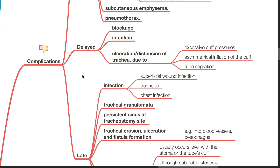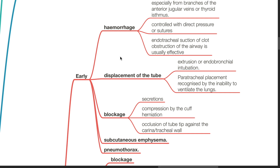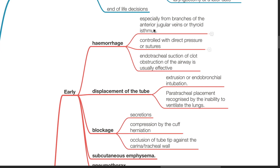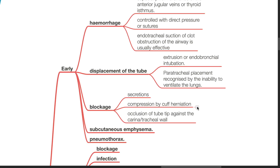Early complications include hemorrhage, especially from branches of the anterior jugular veins or thyroid isthmus, controlled with direct pressure or sutures. Endotracheal suction of clot obstruction of the airway is usually effective. Other early complications include displacement of the tube, extrusion or endobronchial intubation, paratracheal placement recognized by inability to ventilate the lungs, blockage by secretions, compression by cuff herniation, and occlusion of the tube tip against the carina or tracheal wall.